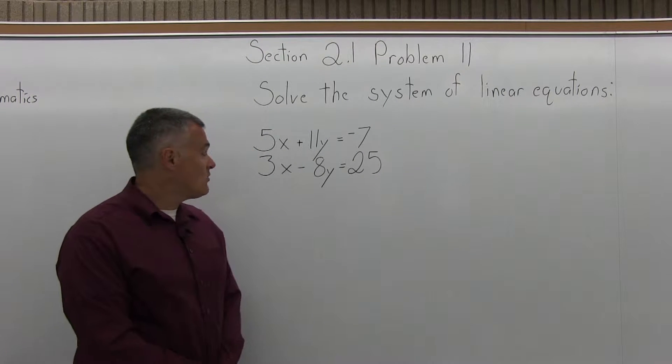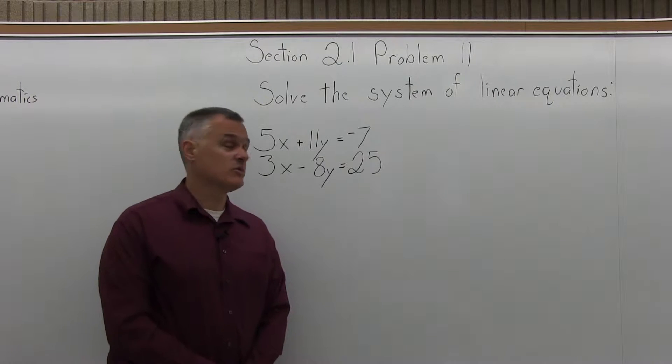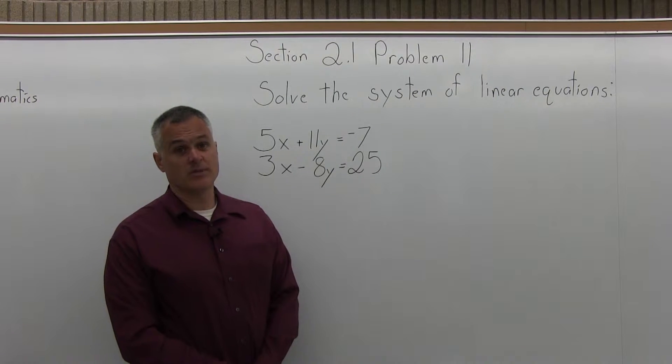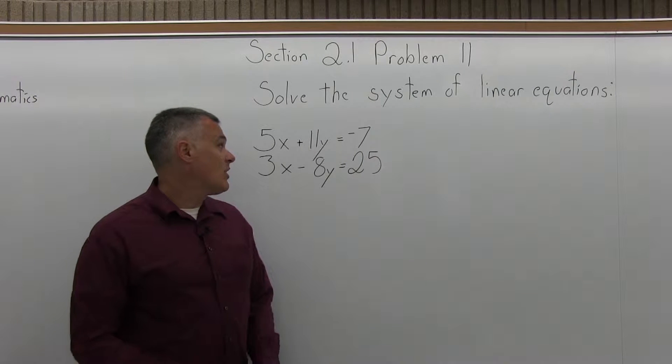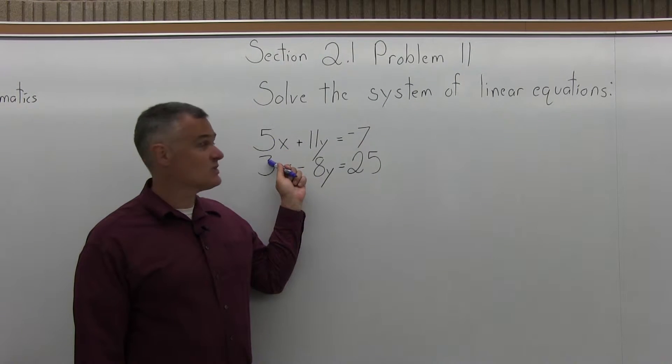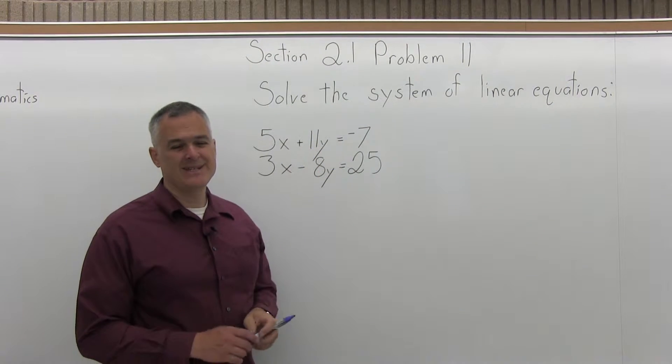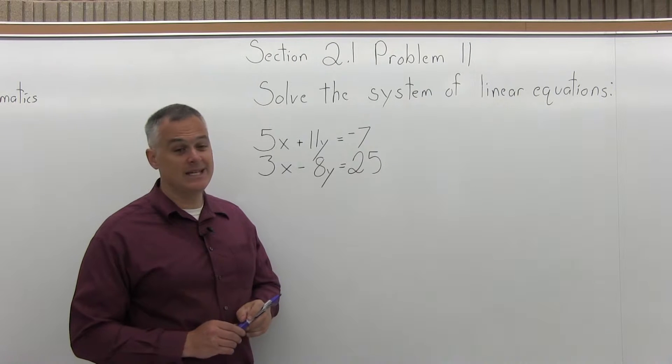So to start this off, we need to multiply one or both equations times some values so that one of the variables will have the same number in front but with opposite signs. So our options are 15x and negative 15x, or 88y and negative 88y. Either way, it's not going to be that easy.